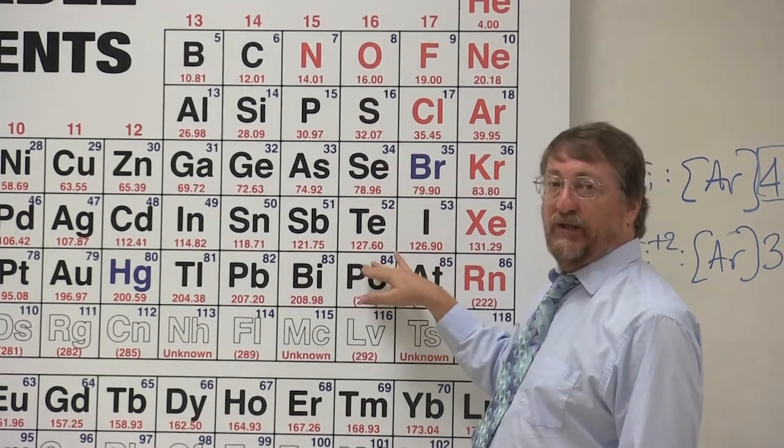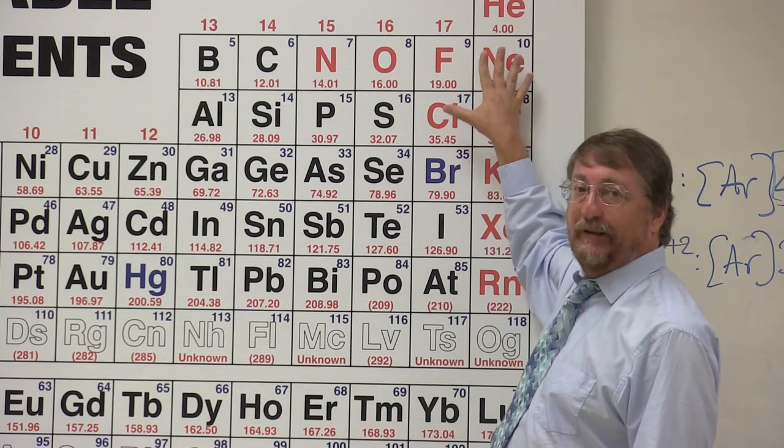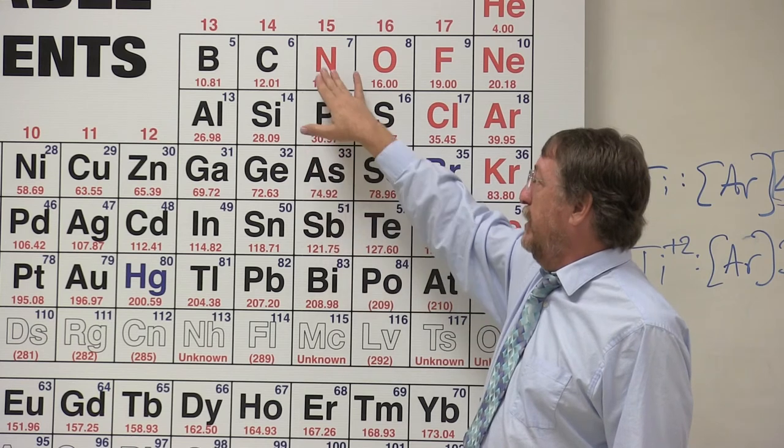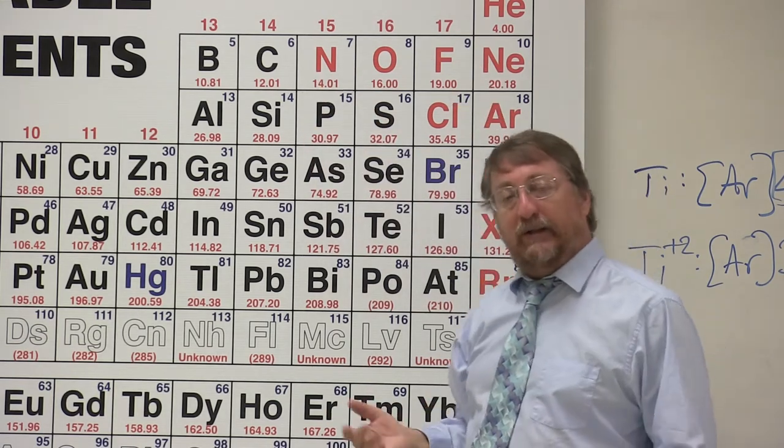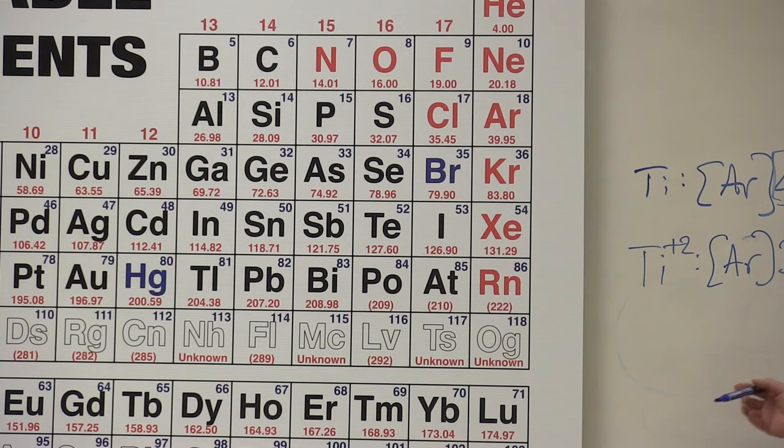Oxygen's column likes to receive two electrons. So when oxygen receives two electrons, now it's like the noble gas. Nitrogen's column likes to receive three electrons. That brings it to the noble gas. So these things are forming negative charges in most cases to form the noble gas configuration.